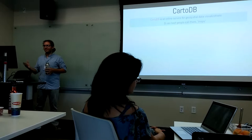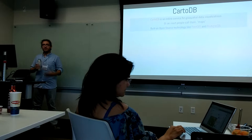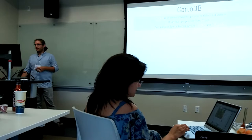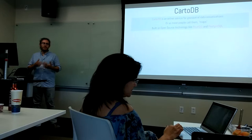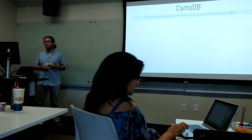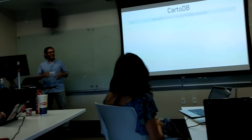CartoDB is used for making visualizations on maps, and it's all built on open source technology — they're standing on the shoulders of giants. PostgreSQL is a really popular open source database, and PostGIS is an extension that allows it to store geospatial data types like points, lines, and polygons. You can do spatial queries like finding whether a point is inside a polygon or if two polygons intersect. With CartoDB you can just drag and drop data from a spreadsheet, KML, or shapefile.